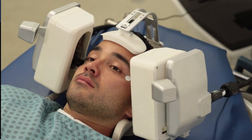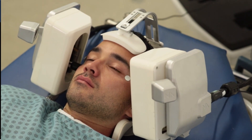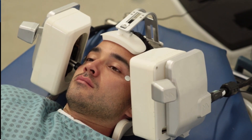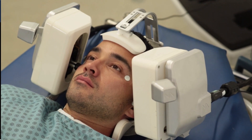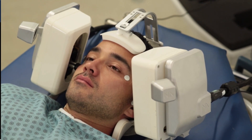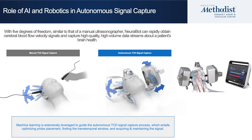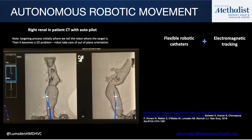Another example is transcranial Doppler looking at embolization during TAVR or aortic arch interventions. The problem is there are not enough people who can do this. There is a robot from NeuroSignal that automatically finds the signal. Beyond finding the signal, all of these protocols are collecting data continuously and updating it. These search patterns allow it to find the middle cerebral artery signal faster and better, lock onto it, and stay locked on during the course of the procedure — making TCD, for which there's not a lot of expertise, more available to the masses.